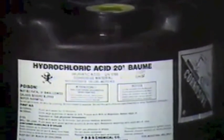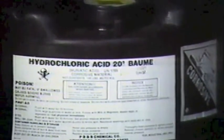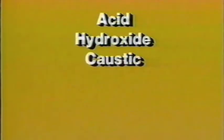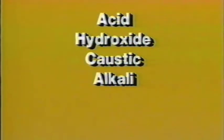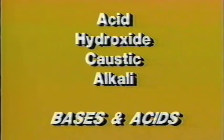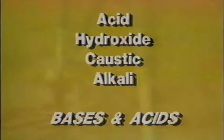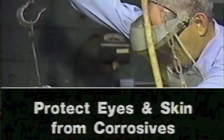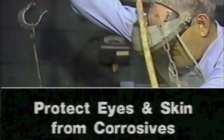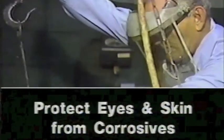The most common corrosives are acids and bases. If you see the word acid, hydroxide, caustic, or alkali as part of a chemical's name or its family name, it is probably a base or an acid. Both bases and acids react with water. Keep all of these substances away from your skin and keep them away from your eyes. Because of the fluid in your eyes, the reaction is usually very powerful and very damaging.